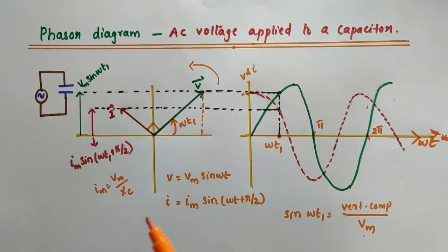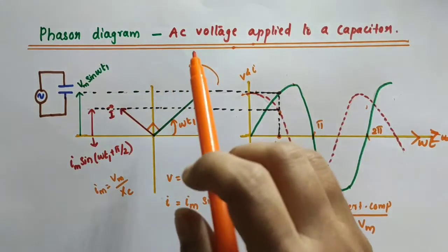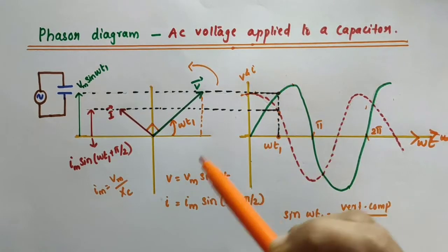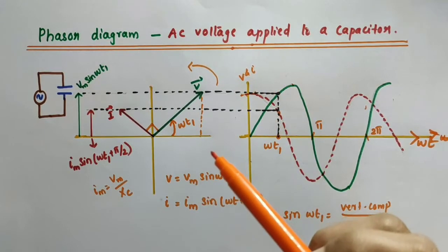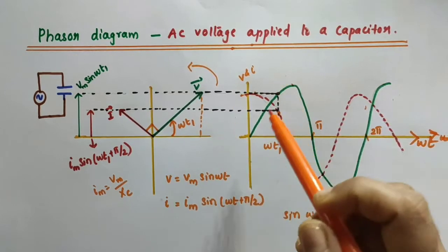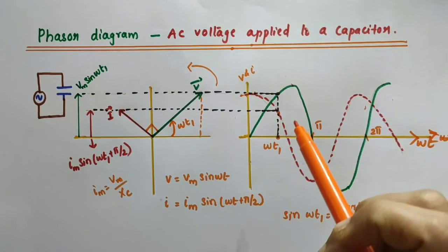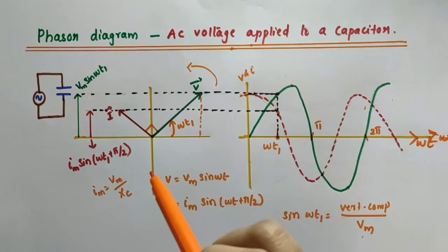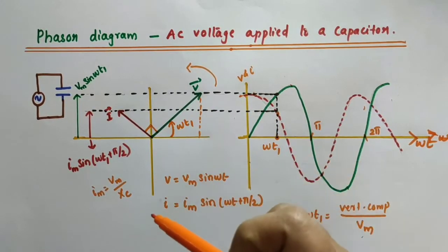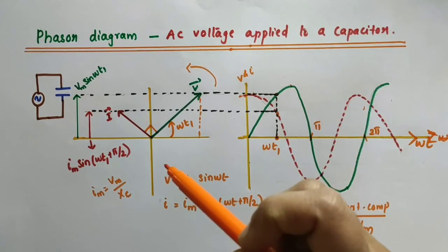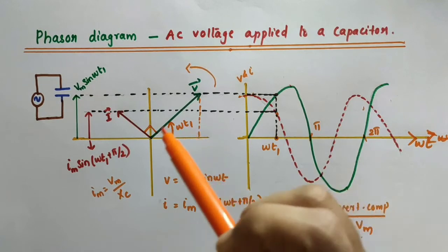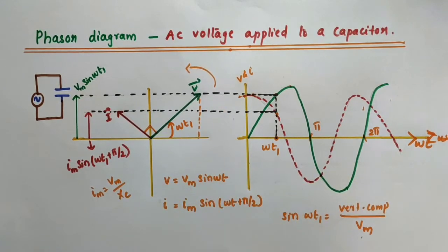In this video we have discussed the phasor diagram for AC voltage applied to a capacitor. I recommend you watch the video on phasors and phasor diagrams, and how to reproduce a sinusoidal wave from the phasor diagram. I will provide the link in the description box so you will get a better idea. I hope you understood this. Thank you.